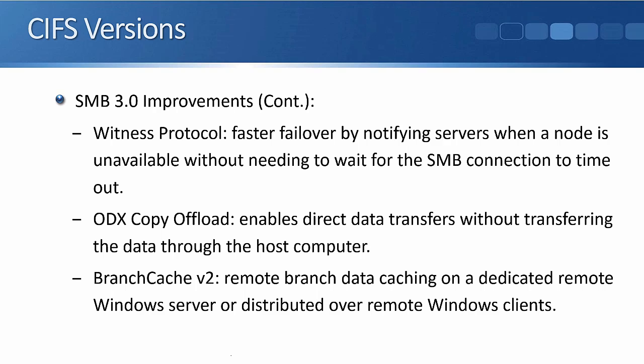The last SMB 3.0 feature covered here is Branch Cache version 2, which is remote branch data caching on a dedicated remote Windows server or distributed over remote Windows clients. In the same New York and Washington scenario, we can put a Windows server in Washington for this purpose. Whenever a client gets a file from the NetApp system in New York, it will be cached on that Washington server. If another client requests the file, it can fetch it locally rather than going over the WAN link to New York, giving us better performance.